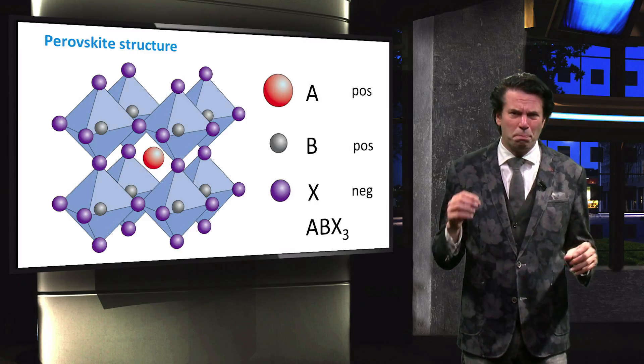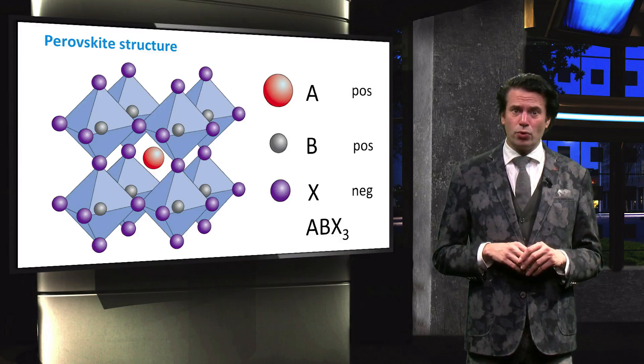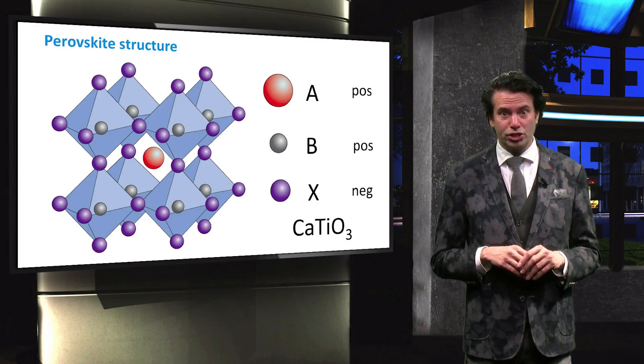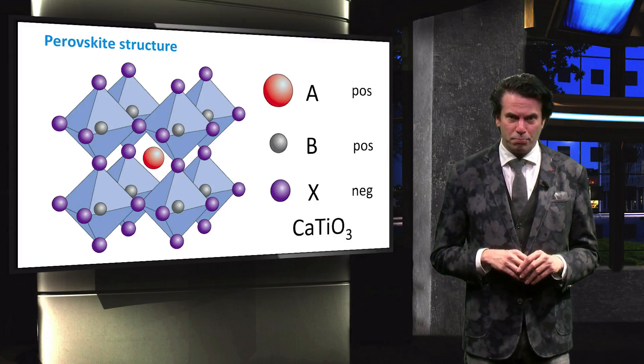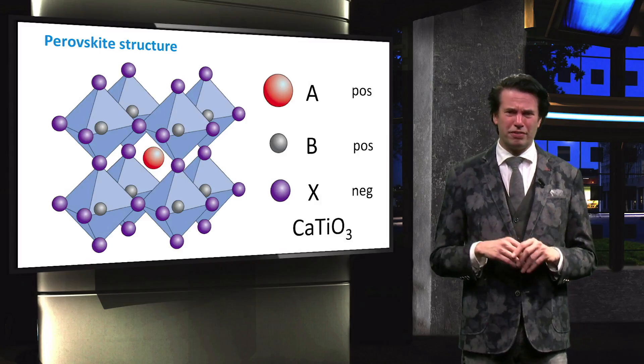The mineral perovskites with the formula of calcium-titanium oxide is named after the Russian mineralogist A. Perovsky, who lived from 1792 to 1856.